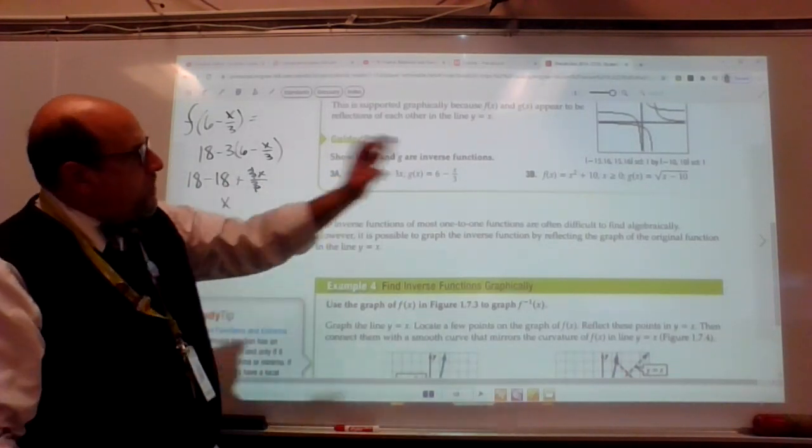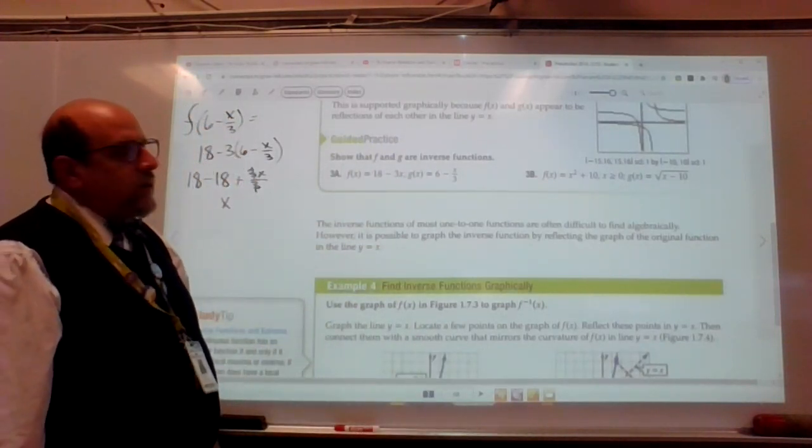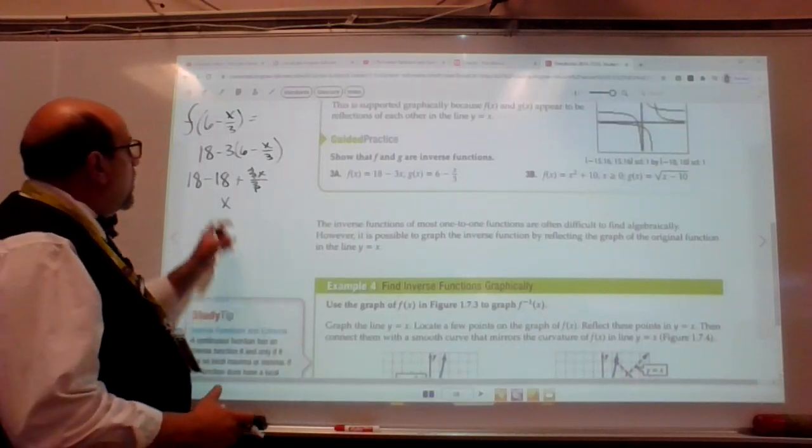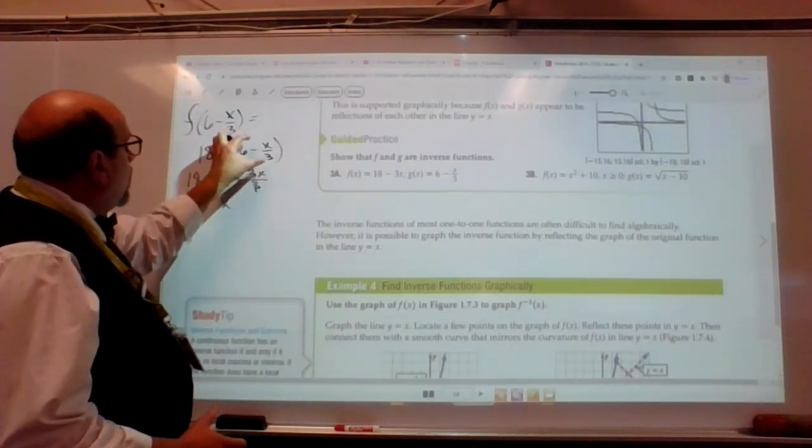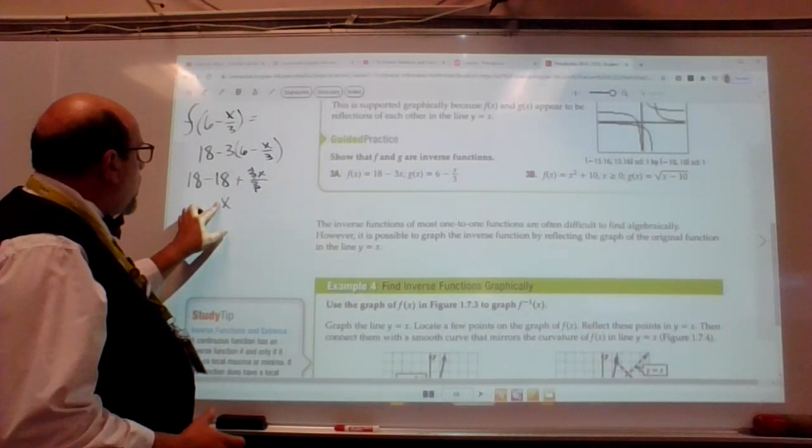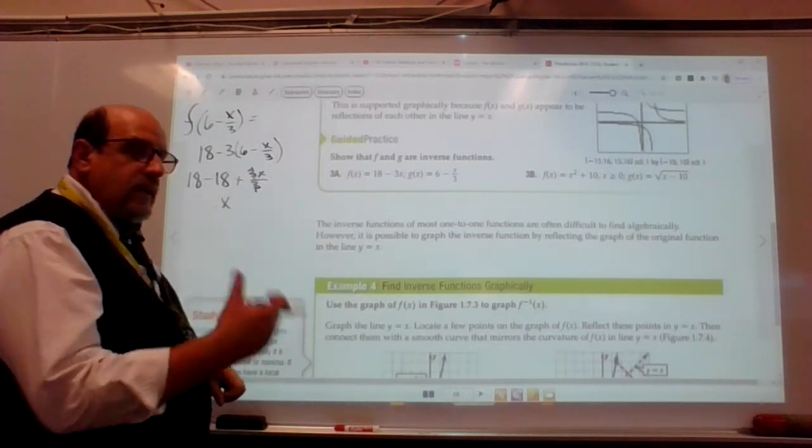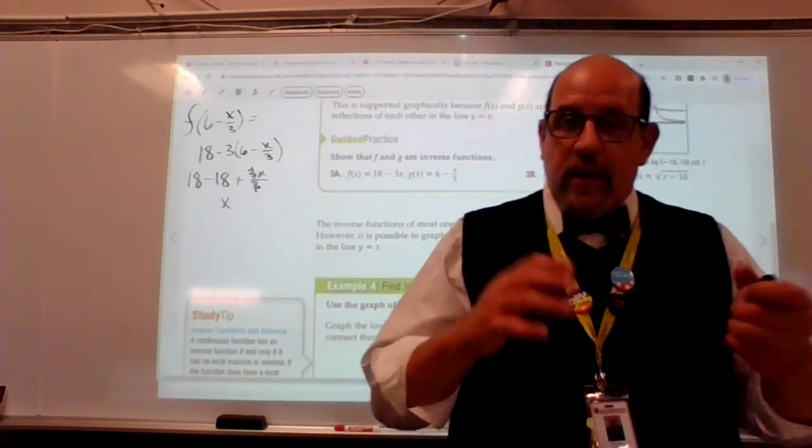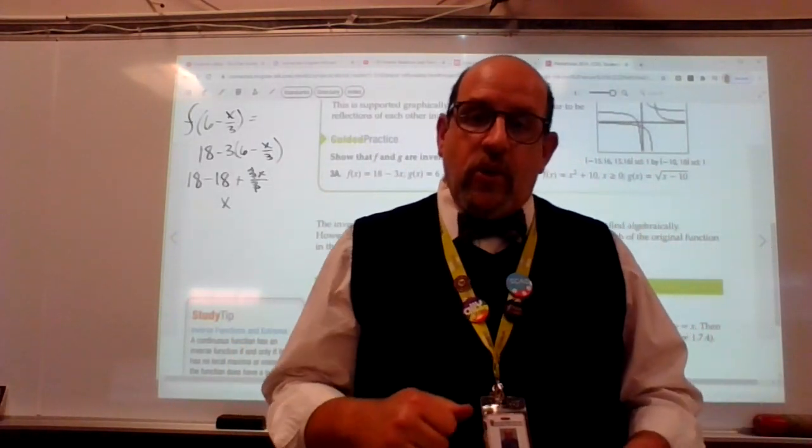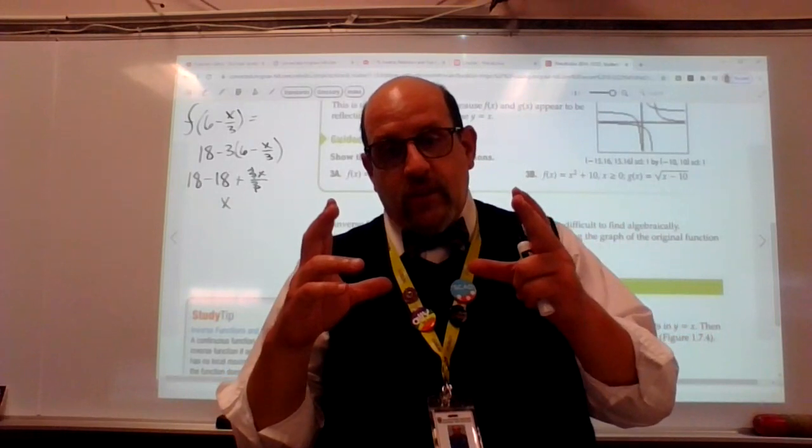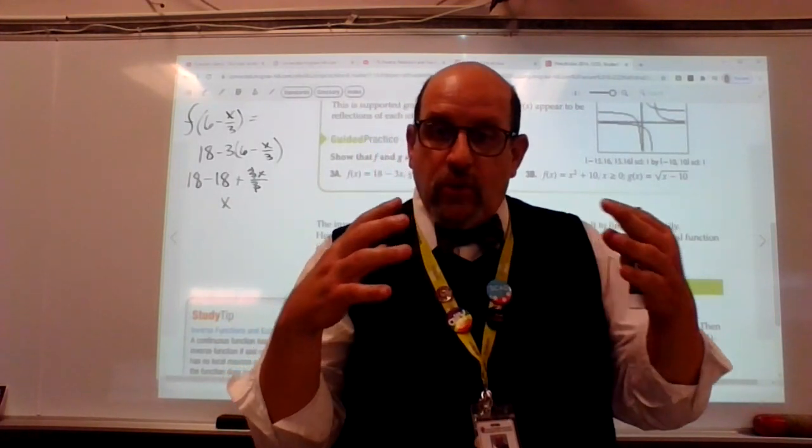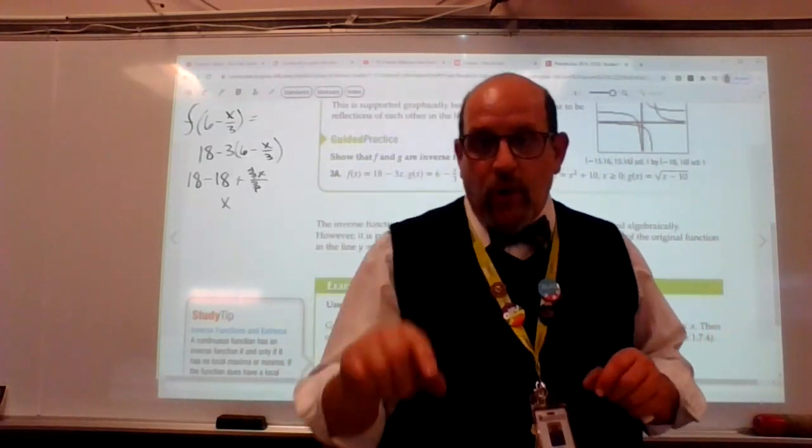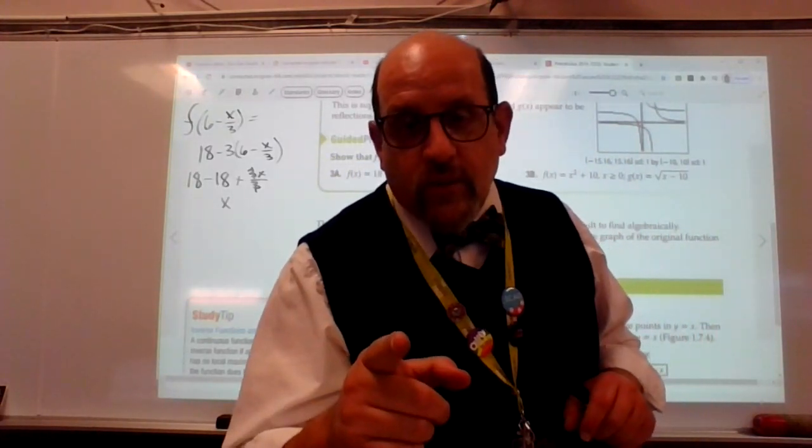We can do the same thing with that. It actually does turn out to be an inverse. But that's it. You just do the composition. If we come out with just x, then it is an inverse. They are inverse functions of each other. Now, the next piece, we're going to take a look at graphs and how to show the inverse by taking points on the graph and redrawing the graph. All right? Thanks so much.